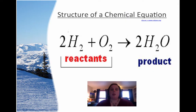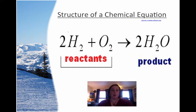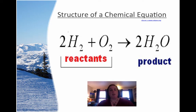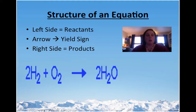What is the structure of a chemical equation? There is always an arrow, always symbols, and always numbers. When you break those down to each side: everything to the left of the arrow is called a reactant. If you want to focus on what you end up with, that's the product. The left side — everything to the left of the arrow — is called a reactant.